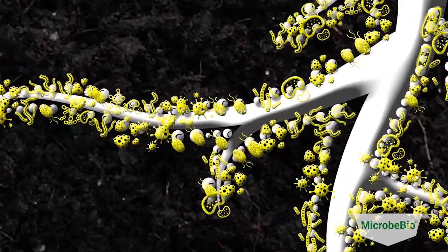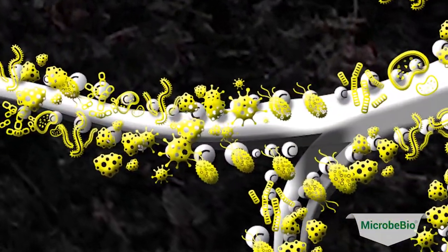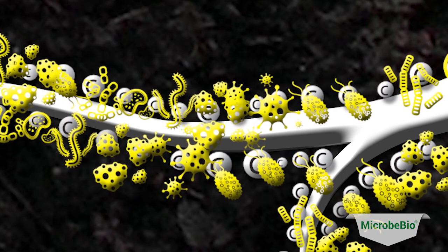The first spore of mycorrhizal fungi is germinated in the soil and makes its way to the nearest plant root.